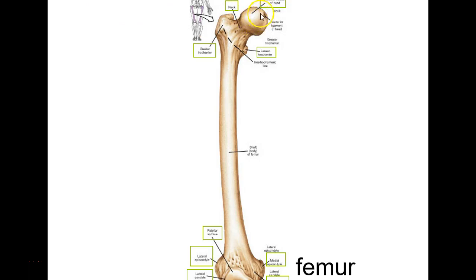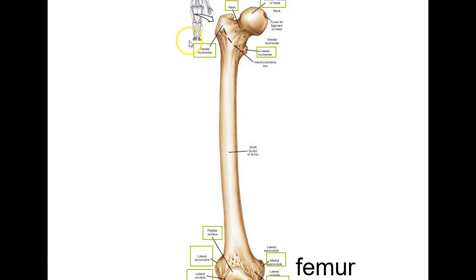Here's the femur — the longest bone you have. It has a head and a neck, but no anatomical neck like the humerus. There's a little pit where blood vessels enter, called the fovea for the ligament of the head — old name fovea capitis. You have a greater and lesser trochanter; trochanters are big, so don't confuse them with tubercles like on the humerus.